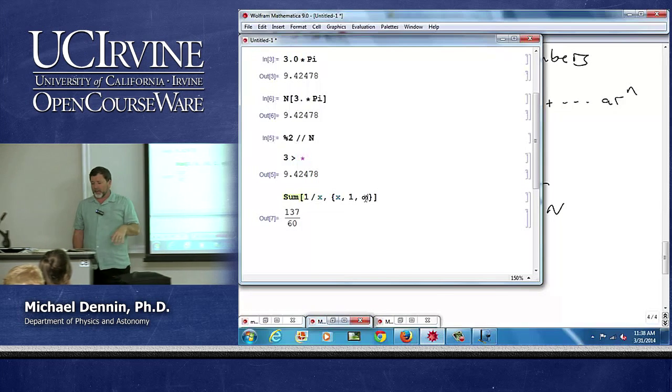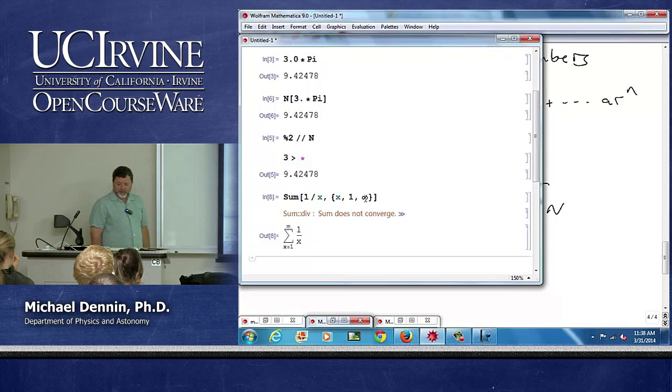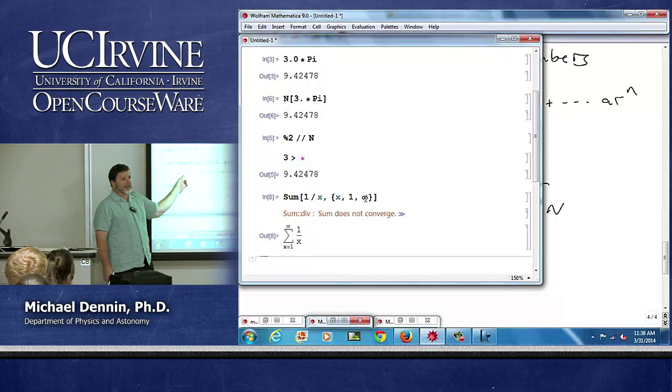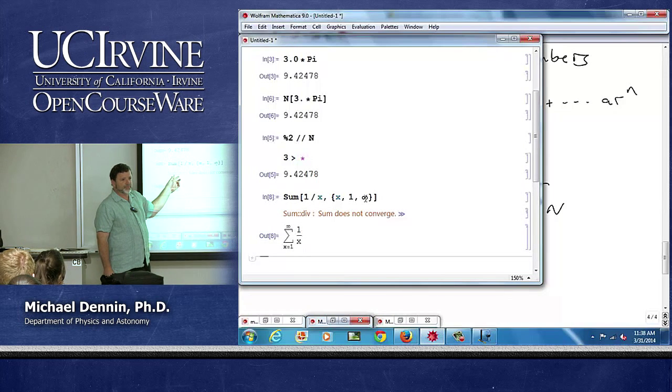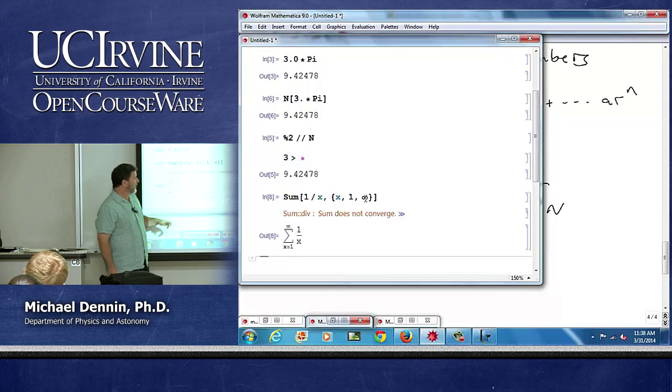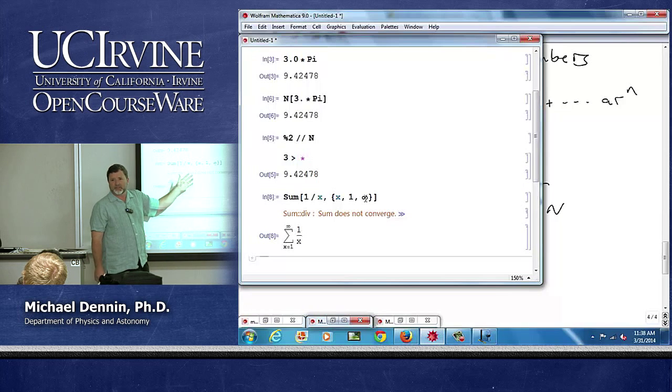Mathematica is perfectly happy to do the infinite sum, except for the fact that one over x does not actually converge, which you hopefully remember from your series class. If you think about the integral of one over x is log x, and that diverges from one to infinity, so the series doesn't converge.